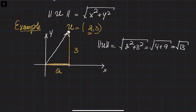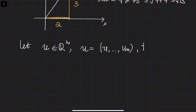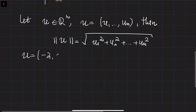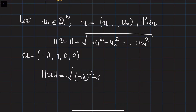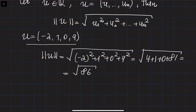Now let's define the norm of the vector for higher dimensional cases. If you are given a vector u in the n-dimensional space — meaning a vector with n components — then the norm of this vector u is defined as the square root of u1 squared plus u2 squared plus ... plus un squared. For example, if you are given a vector u with 4 components: minus 2, 1, 0, and 9, then the norm equals the square root of (−2)² + 1² + 0² + 9², which is the square root of 4 plus 1 plus 0 plus 81, giving the square root of 86.